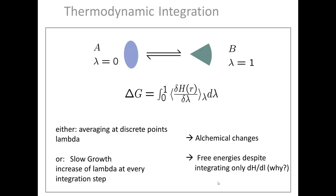Some of you may wonder how integrating across the gradient of the potential energy function gives us a free energy, and yet also captures the entropic contribution. I think this is a nice piece of homework — many of you should be able to figure that out, and if not, please feel free to contact us at any time.